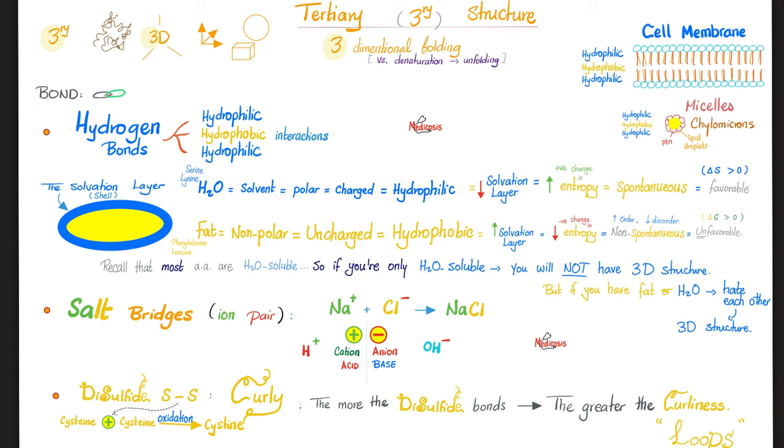Remember the cell membrane. Put the water soluble on the outside and on the inside, and bury the hydrophobic, the fat, in the middle. Just like this. Fat is in the middle, surrounded by water. Hydrophobic in the middle, surrounded by hydrophilic. This water is forming a shell, known as the solvation layer. Why? Because water is a solvent.